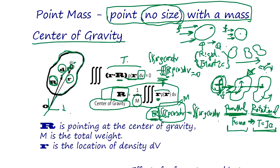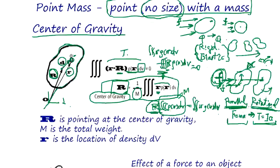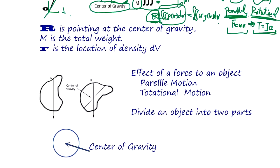The center of gravity can be outside of the object. For example, a ring object has its center of gravity in the middle, so it's outside of the ring material itself. To find the center of gravity of any object like a potato, you take the integral of the position vector r times density over volume, divided by the total mass M.